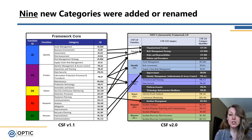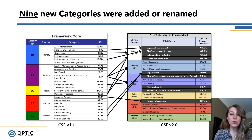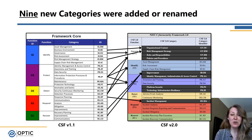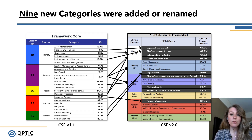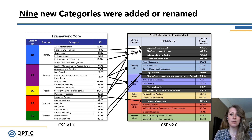Two of the larger changes are roles and responsibilities and policies and procedures in Govern. These were concepts taken from other areas of the framework — largely Identify — and then expanded upon. Subcategories around processes and roles from many other functions were consolidated into the Govern function to streamline and make it easier to understand. Additionally, improvement in Identify was added, largely taken from Respond and Recover each having their own improvement category, broadening it to show we need improvements across the board — covering the entire lifecycle of the framework.